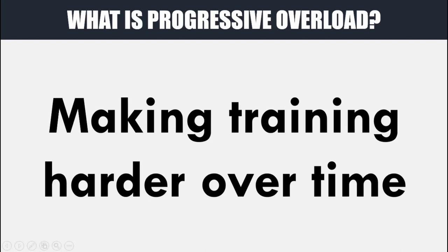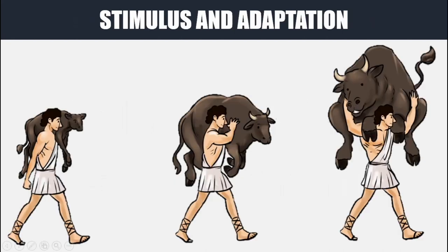We need to make training harder over time in order to adapt to the stimulus. The basis of progressive overload stems from the classic story of Milo from Croton. Essentially, the story goes that Milo started off by carrying a baby calf every day while he was younger. He continued to carry this calf every single day, and as the calf grew and got bigger he continued to carry it, and he therefore got stronger and stronger.